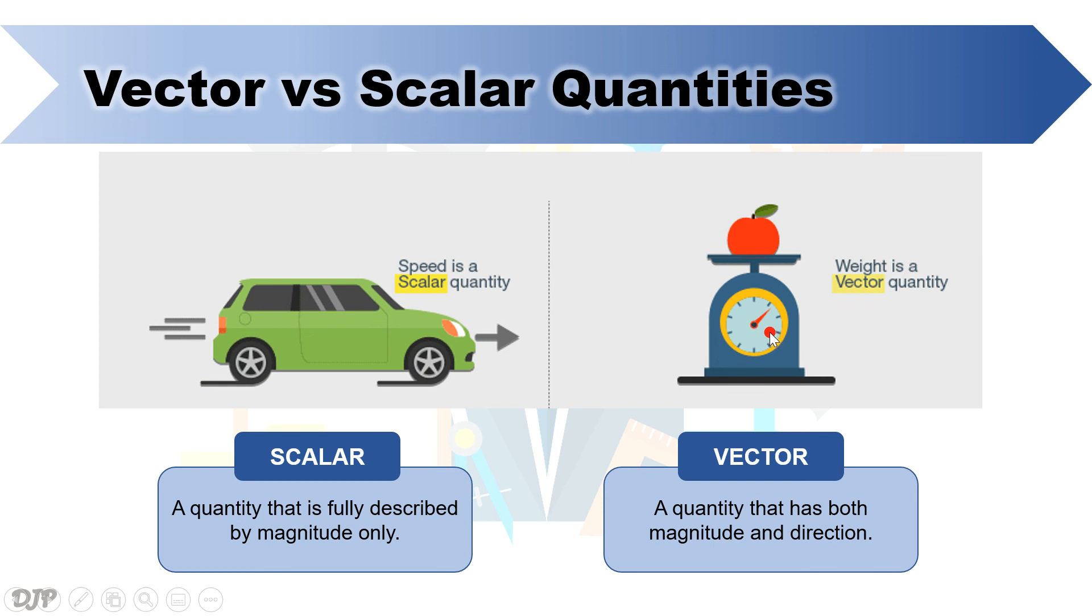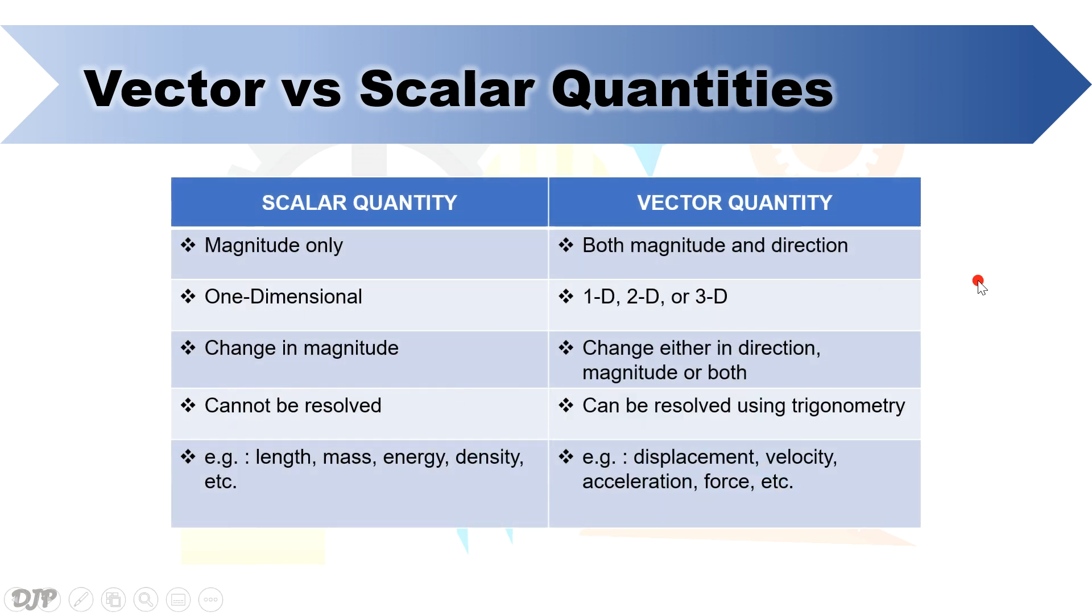To further see the difference between vector and scalar quantities, we can refer to the following table. In this table, the first two rows are pretty much self-explanatory. However, in the third row, we can see that scalar quantities can only change in magnitude, while for vector quantities, they can change either in direction, magnitude, or both. Also, scalar quantities have no components, which means they cannot be resolved, while vector quantities can be resolved using trigonometry.